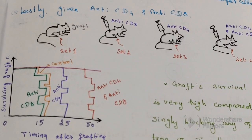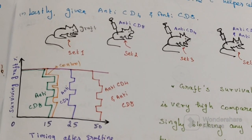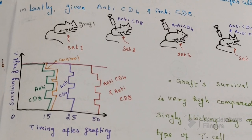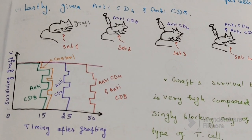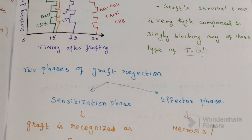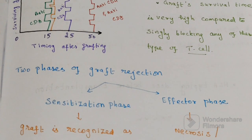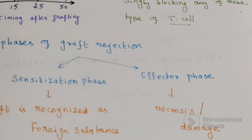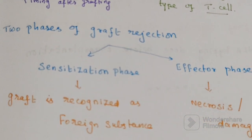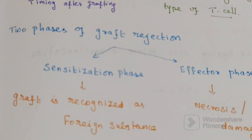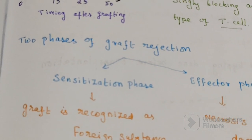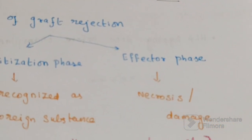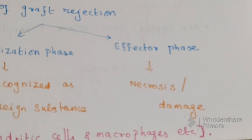This experiment tells us that T cells are a key player behind graft rejection. Now let's talk about the two phases of graft rejection. The first one is the sensitization phase and the other is the effector phase. In the sensitization phase, the graft is recognized as a foreign substance. In the effector phase, necrosis or damage happens.